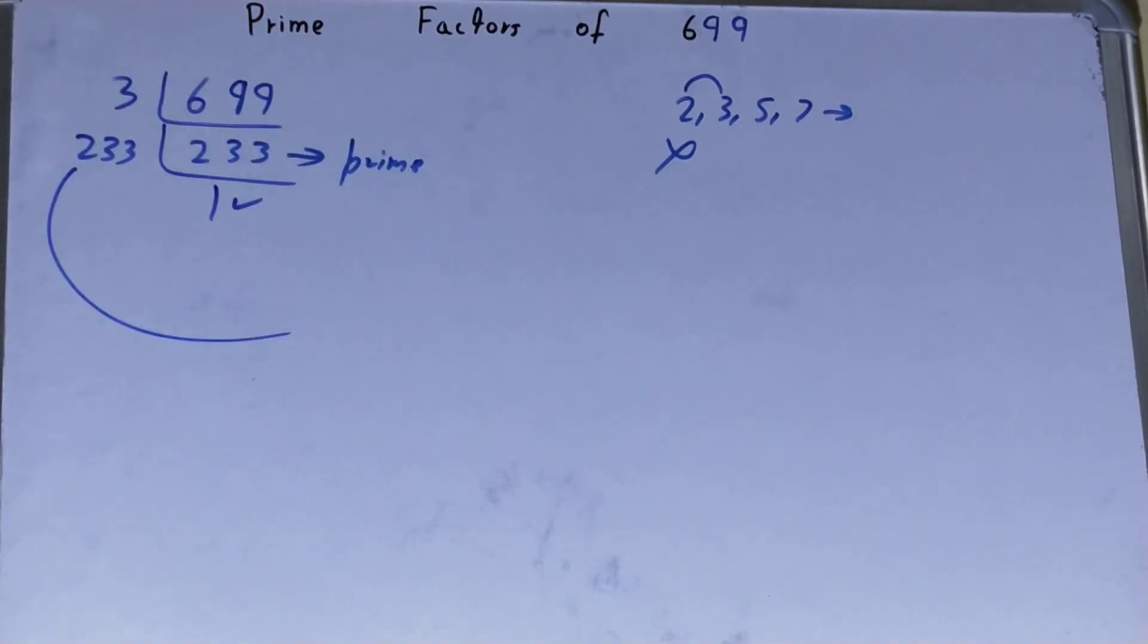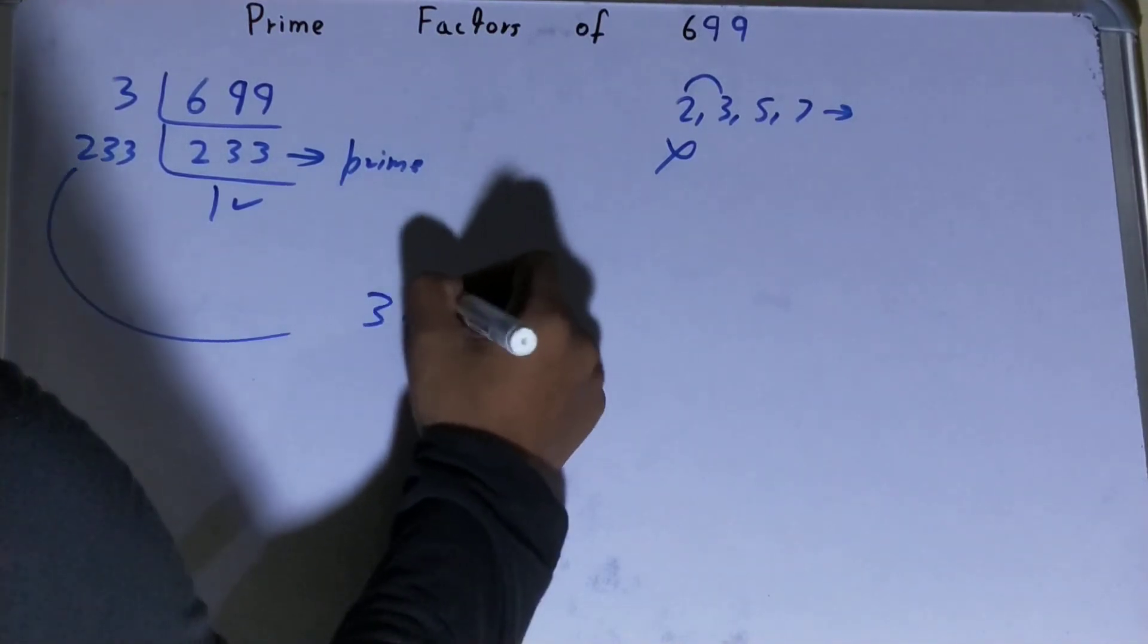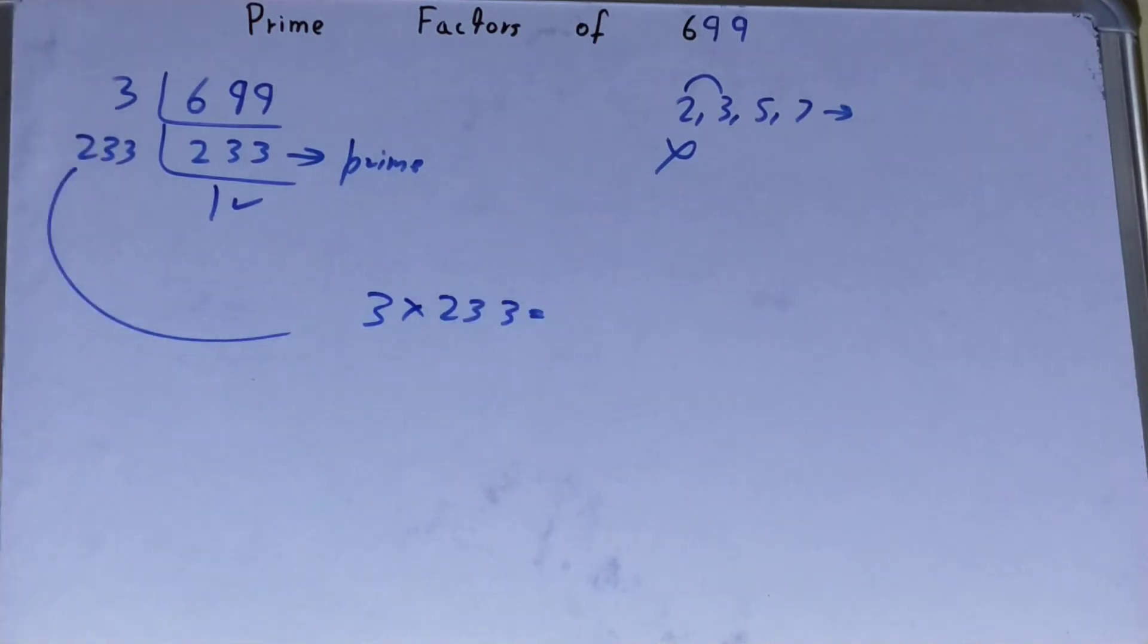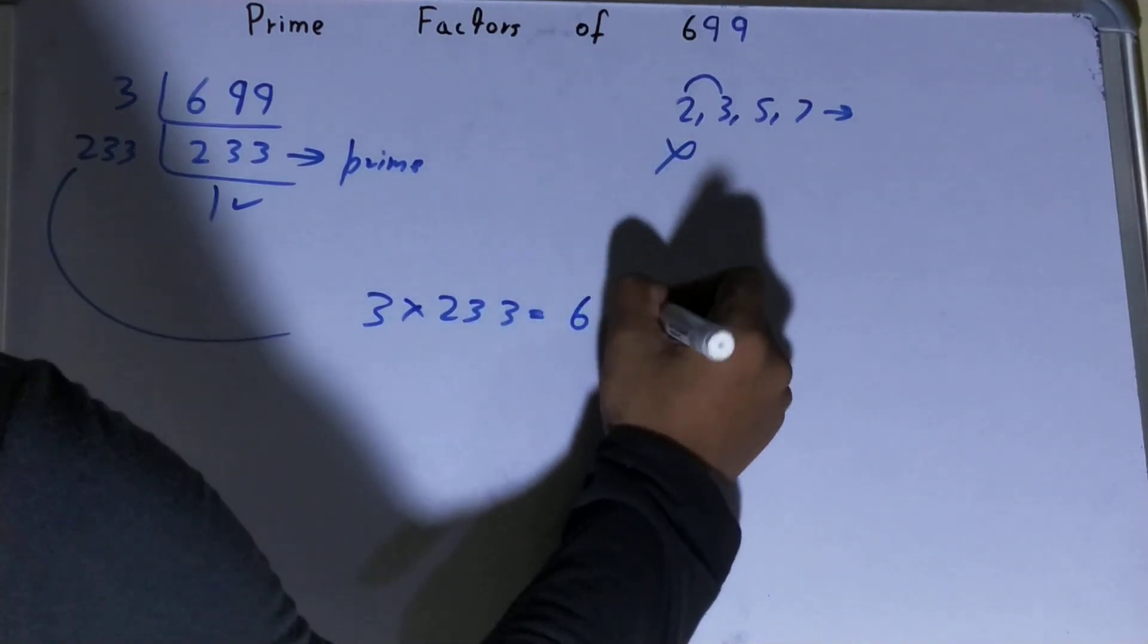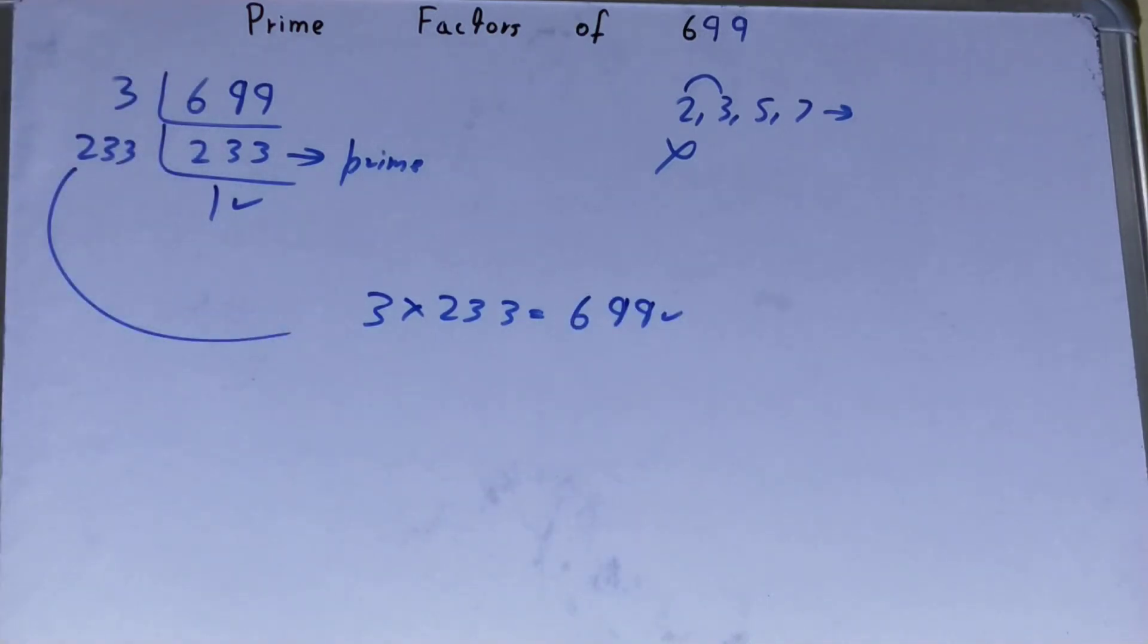Whatever you have on the left-hand side will be the prime factors of 699, that is 3 × 233. If you want to check whether it is correct, you can multiply them. If you get the number back again, that means your calculation is correct.